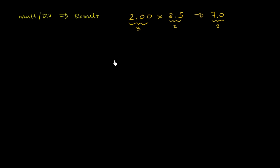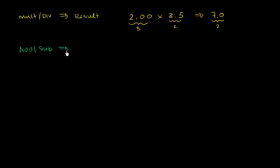When we do addition and subtraction, it's a little bit different. When you add or subtract, the significant digits don't matter as much as the actual precision of the things that you're adding — how many decimal places do you go? So for example, if I were to add 1.26 and 2.3, these are measurements.